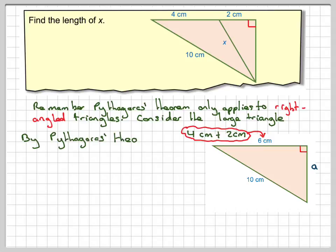So by Pythagoras' theorem, applying to this triangle here, we're going to have that 10 squared, which is the longest side of the triangle, is going to be equal to 6 squared plus A squared. Remember now that A is going to be one of the smaller sides.